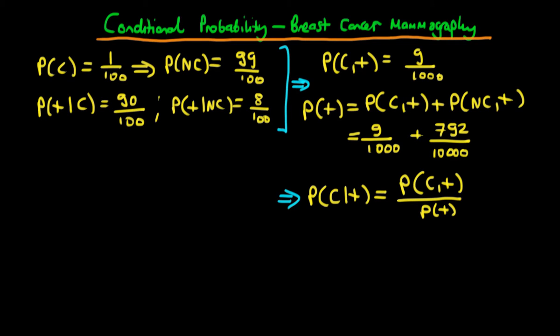In this video, I'm going to continue to talk about the uses of conditional probability, following on our example of breast cancer mammography. At the end of the last video, we worked out the probability that an individual has cancer and they test positive, this joint probability up here at the top, as 9 over 1000.